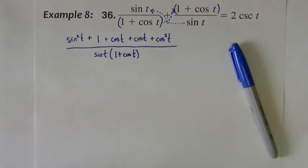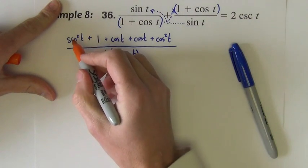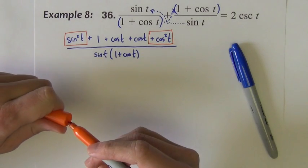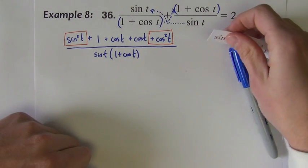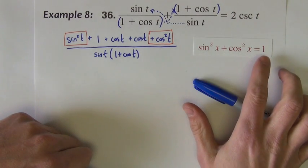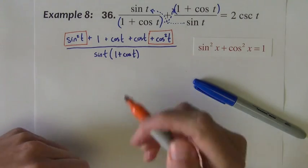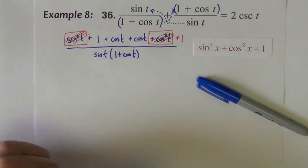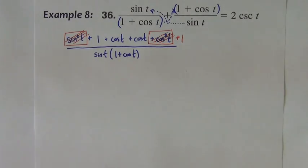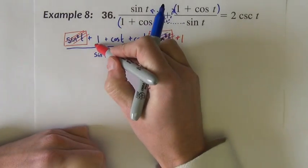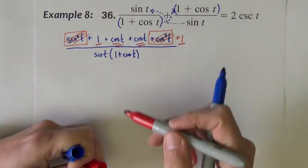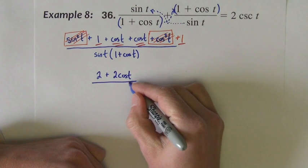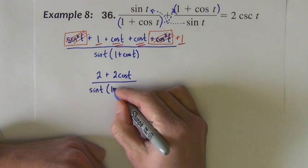Now, up in the numerator I'm going to skip some steps, but I'm going to highlight them here with different color. Up in the numerator I see a sine squared plus a cosine squared. Now I know they're not right next to each other, but they don't have to be right next to each other. A sine squared plus a cosine squared is equal to 1. So this term and this term can be changed to 1. That allows me to combine like terms. The ones combine, the cosines combine, and the numerator of this problem becomes 2 plus 2 cosine t. Denominator I'm going to continue to leave as it is.